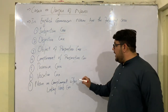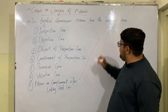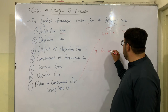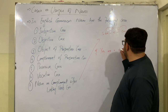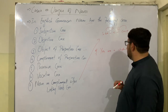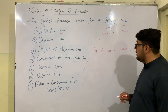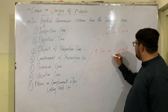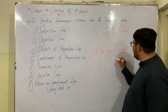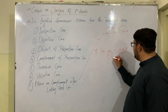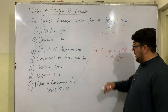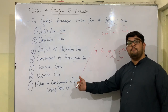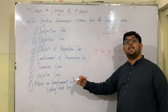The last case of noun is noun as complement after a linking verb. For example: 'You are a student.' Here, 'a student' is a noun that comes after the linking verb 'are' to act as the complement of the linking verb. In this case, a noun comes after linking verbs to function as a complement.